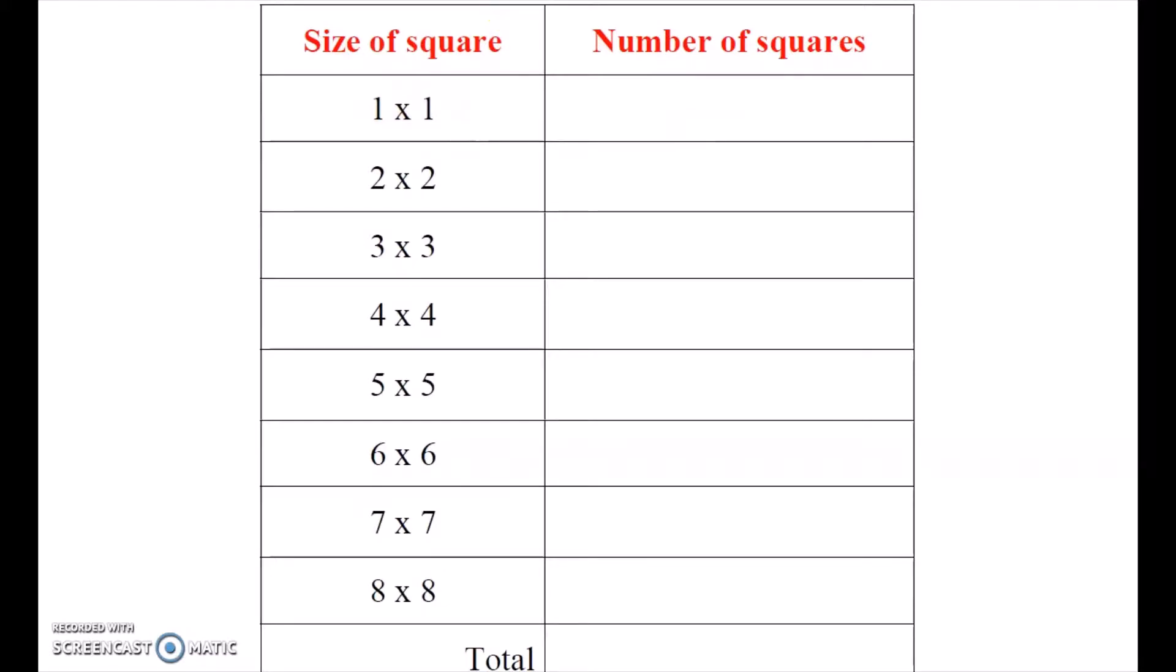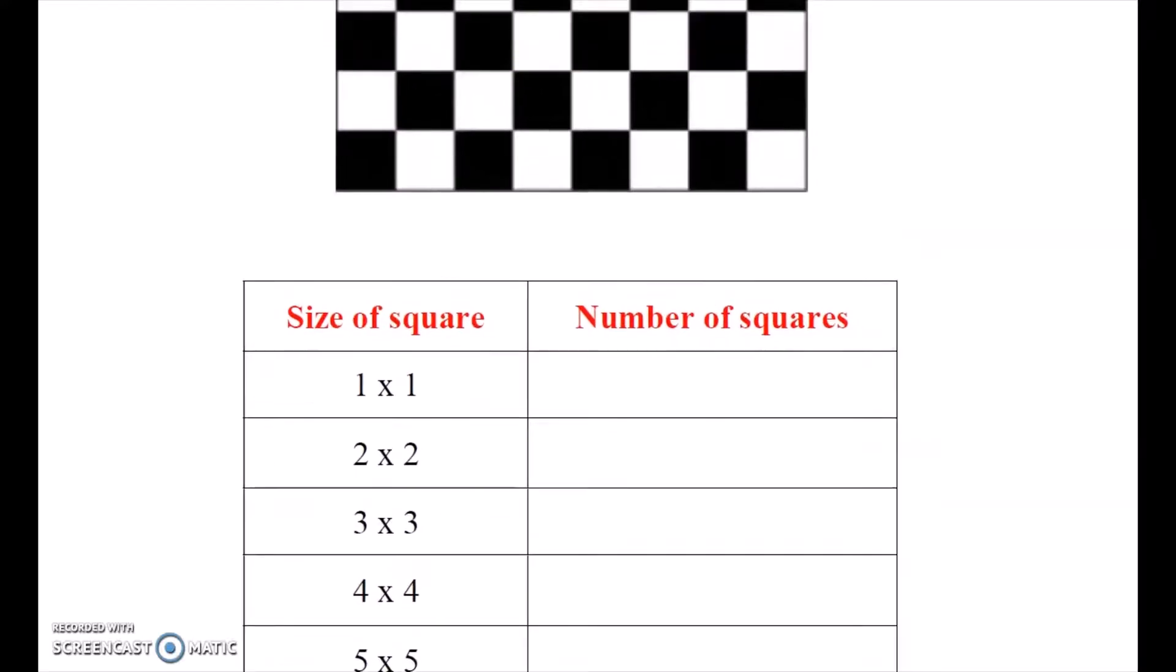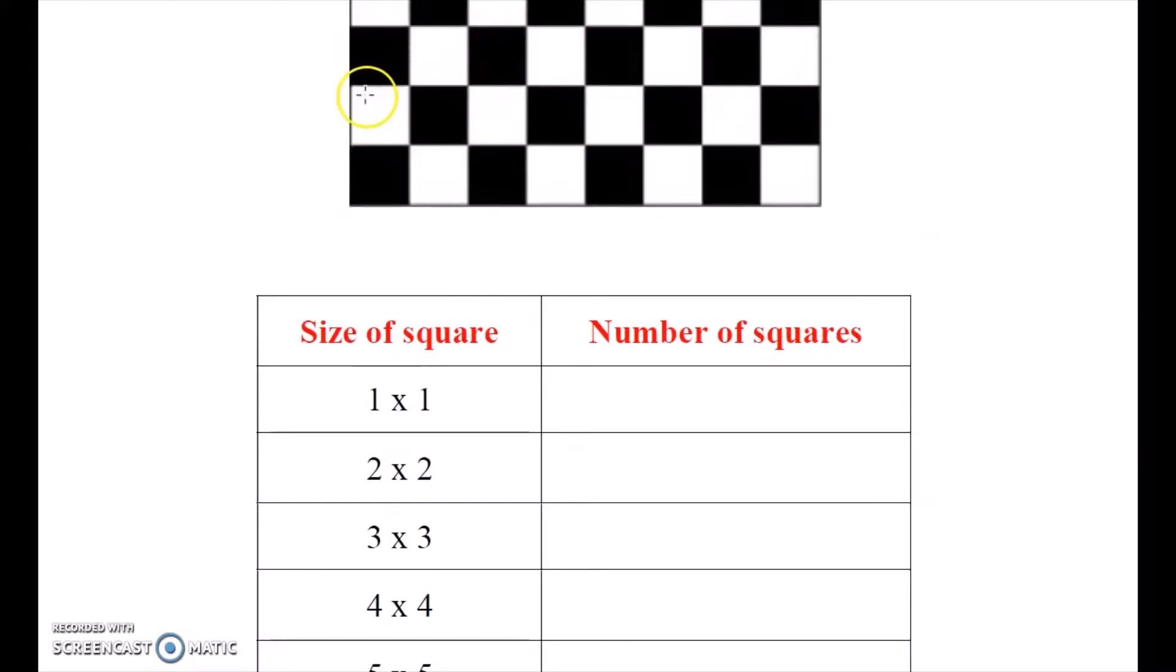When we say a 1x1 square, I'm talking about these small squares right here. How many of them are there on a checkerboard? And then when we say something like a 2x2 square, we're asking how many of these 2x2 squares are there on a checkerboard.